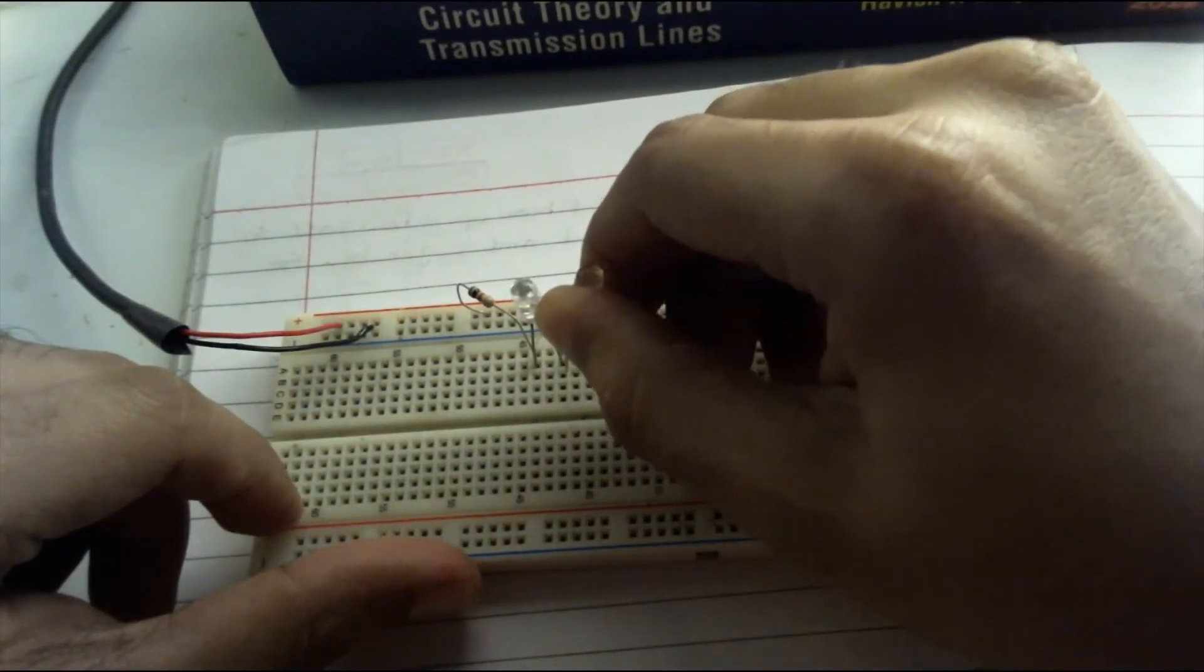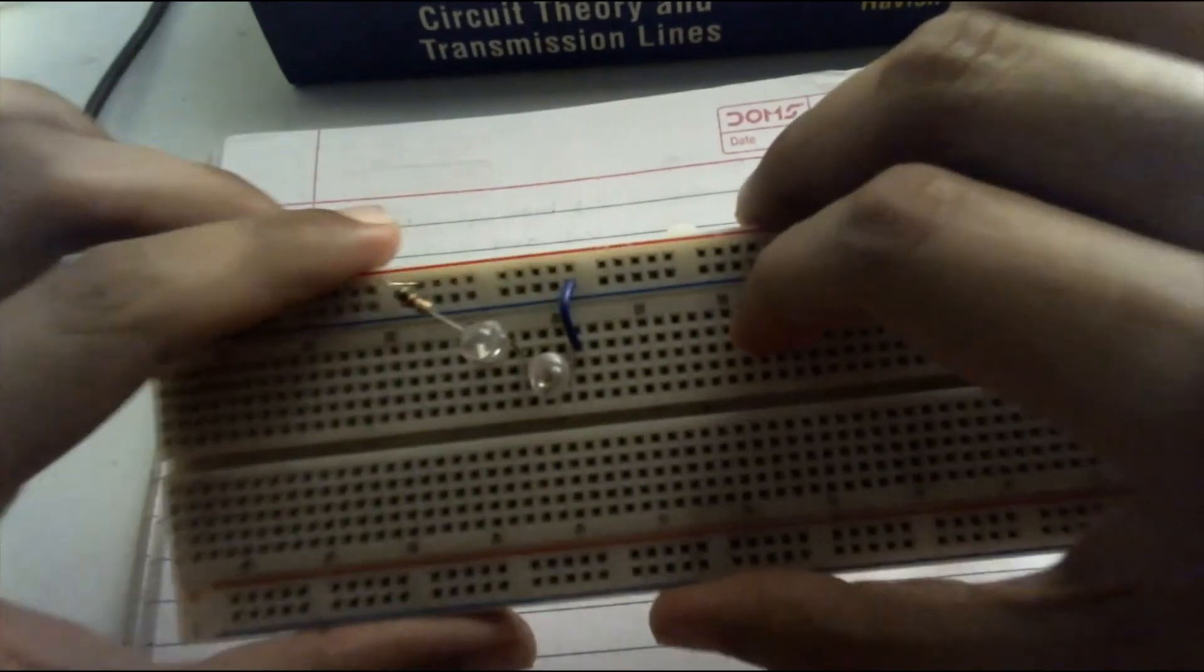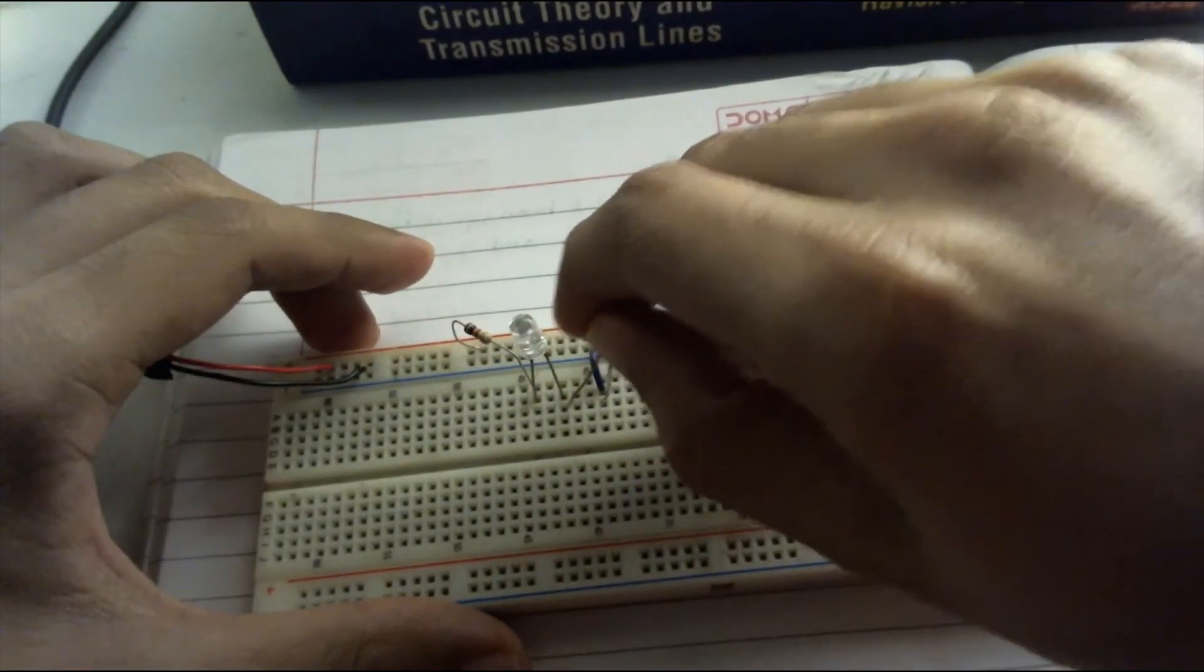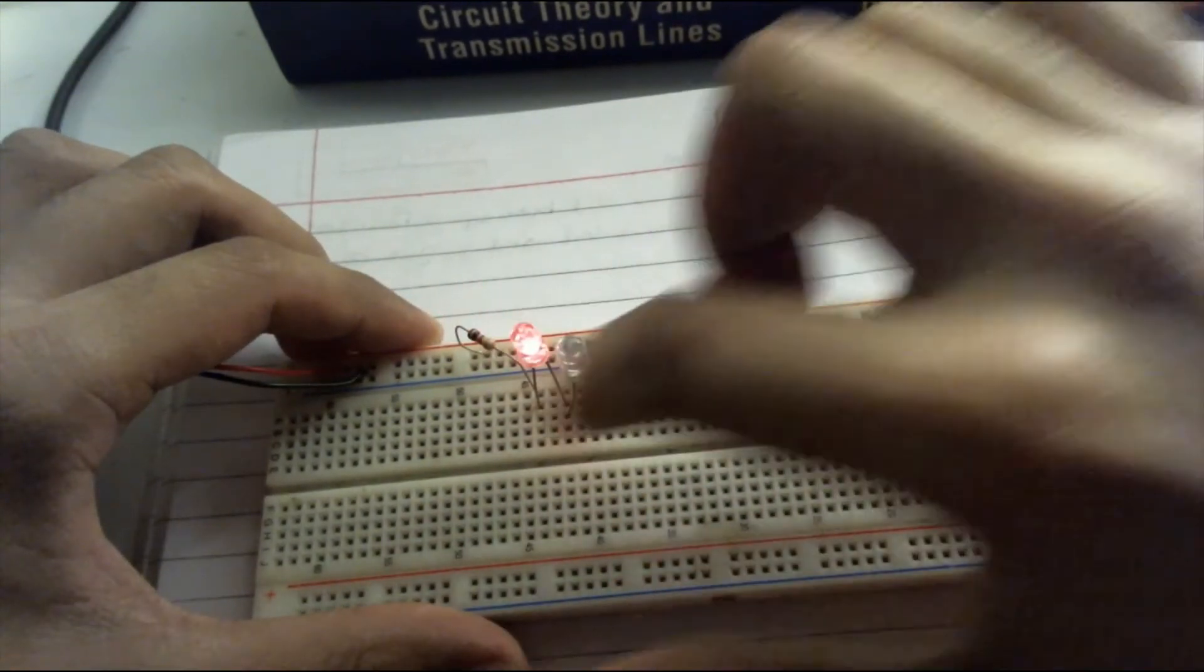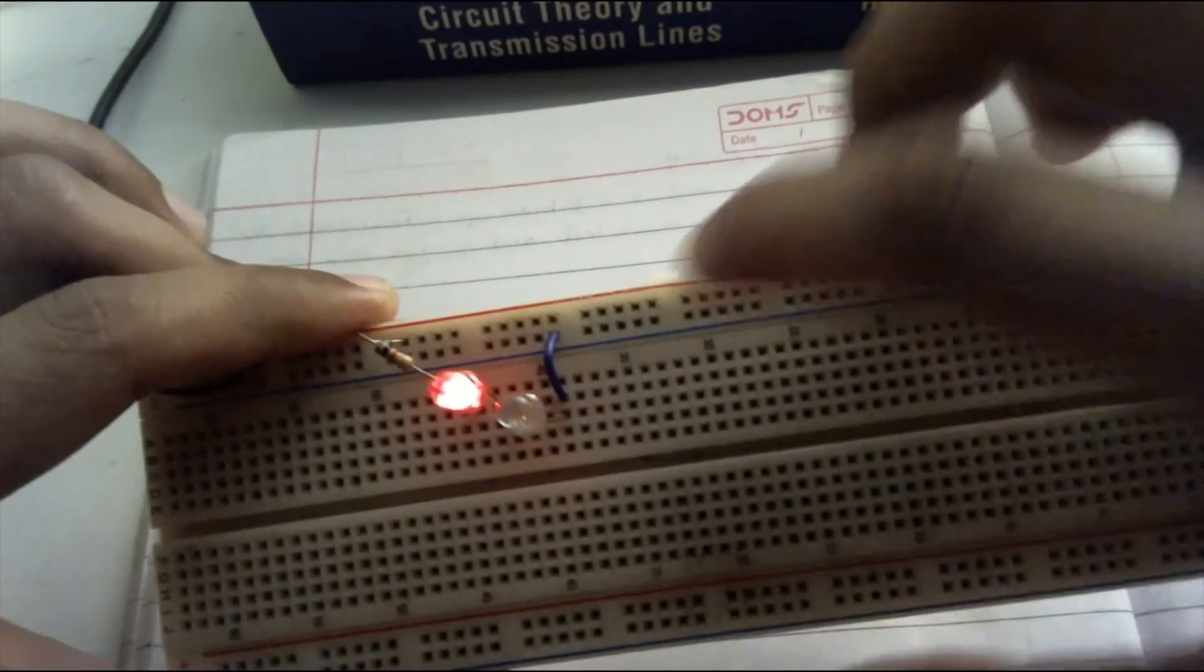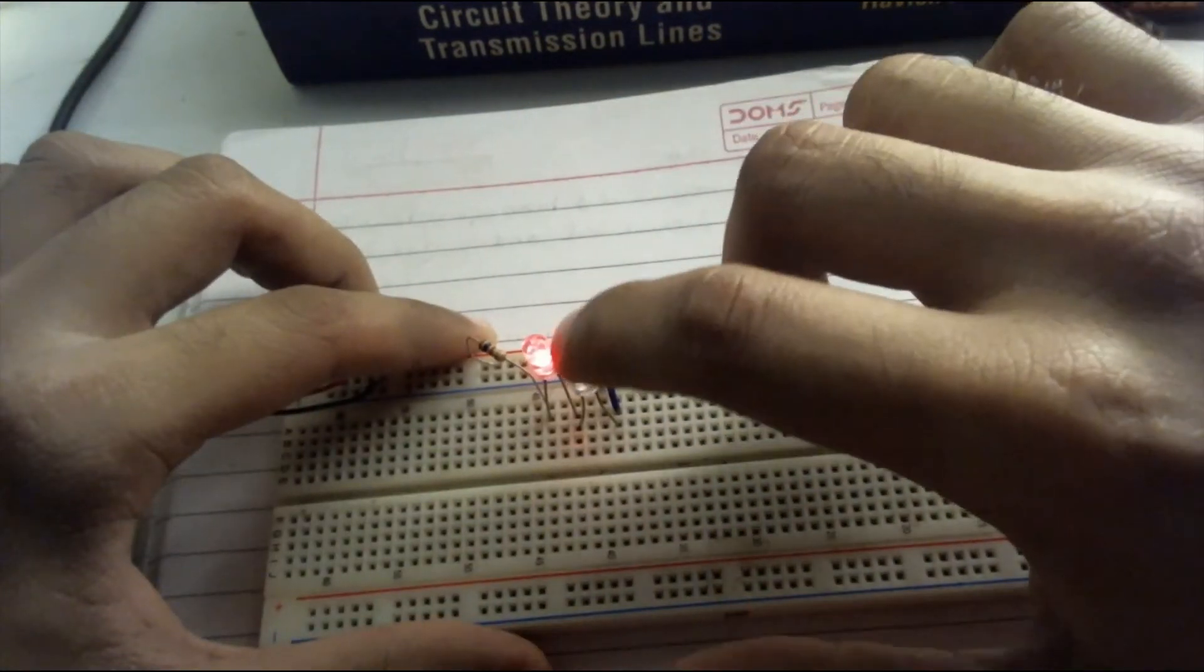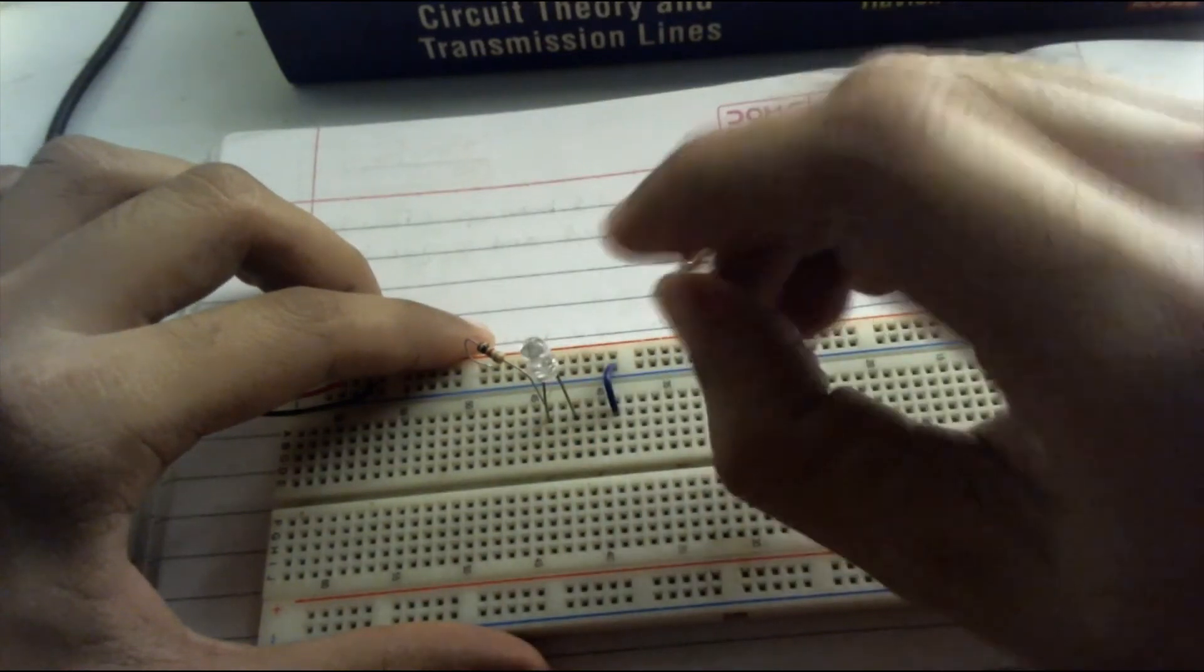And you can see that it doesn't glow. Also it's not emitting any IR light. Now I will connect it in forward bias. And this LED glows - that means the circuit is complete. In forward bias it's conducting, and you can see that it's not emitting any IR light. That means it's not an IR LED, it's a damaged red LED.